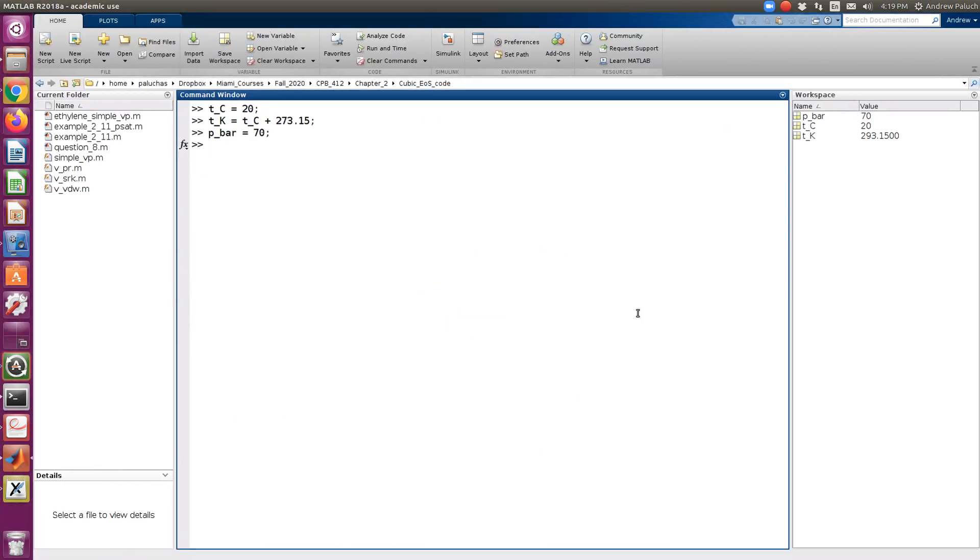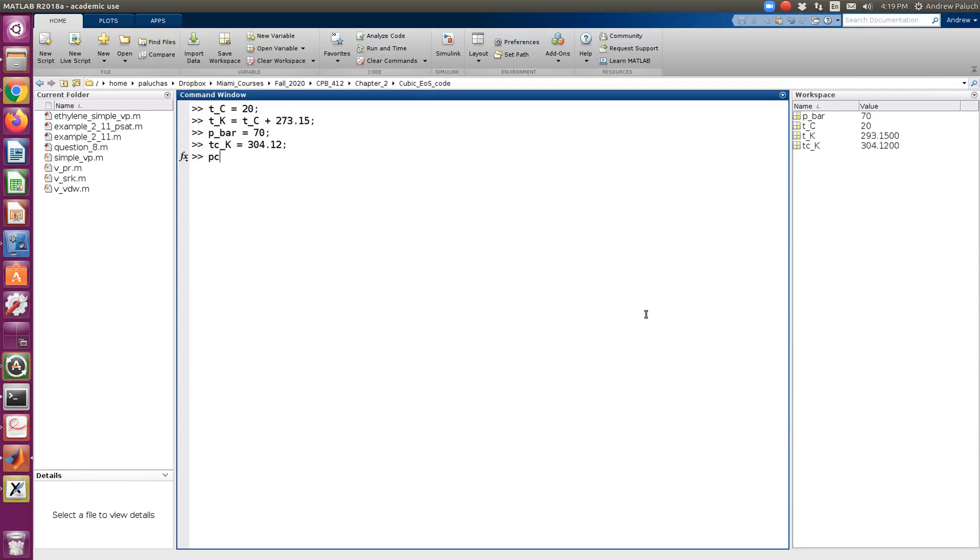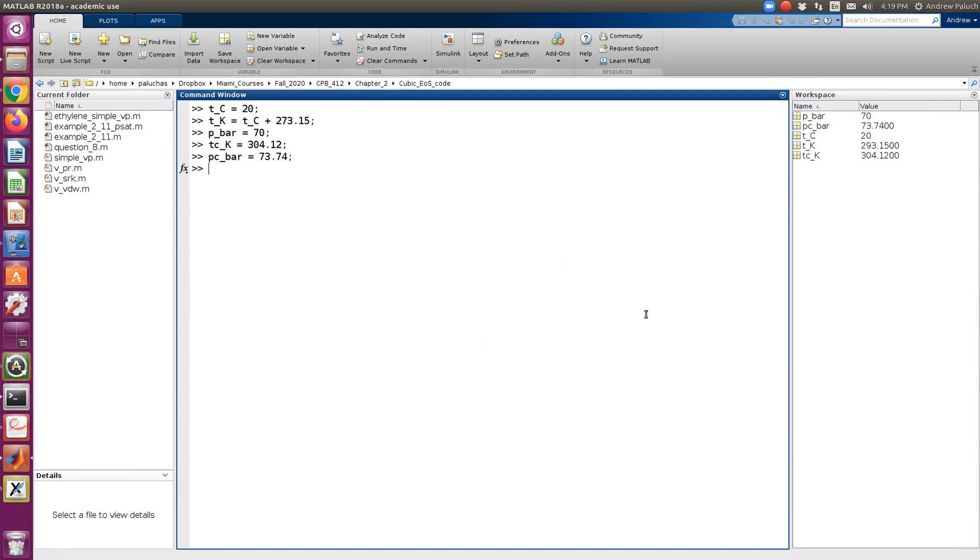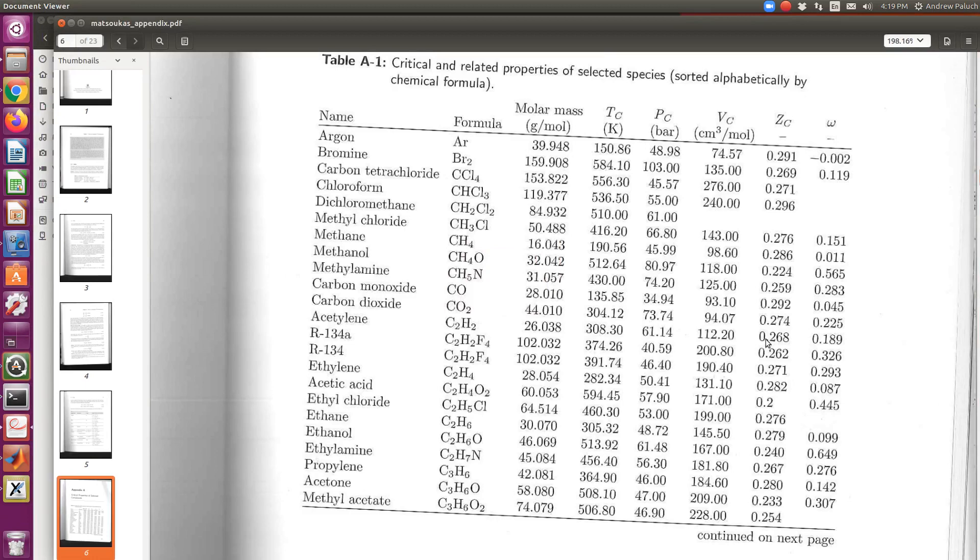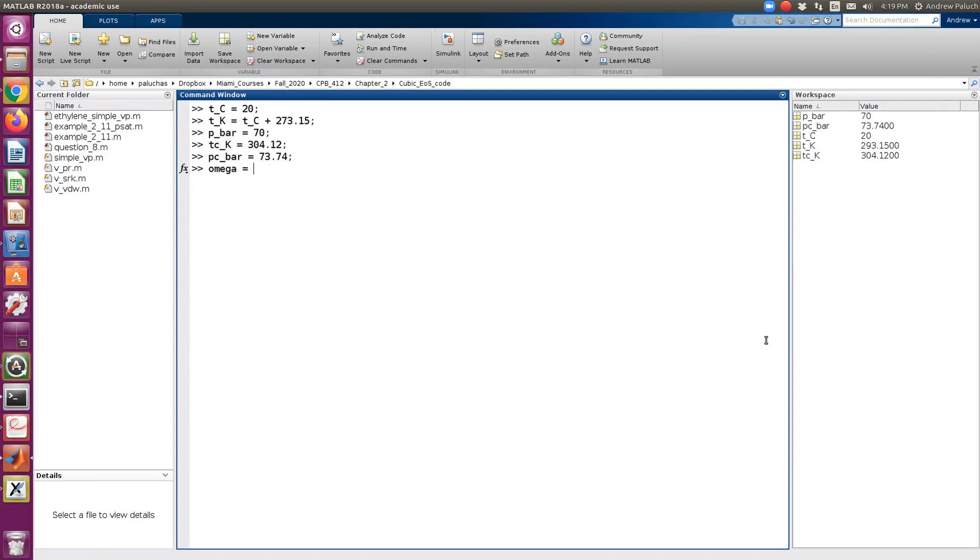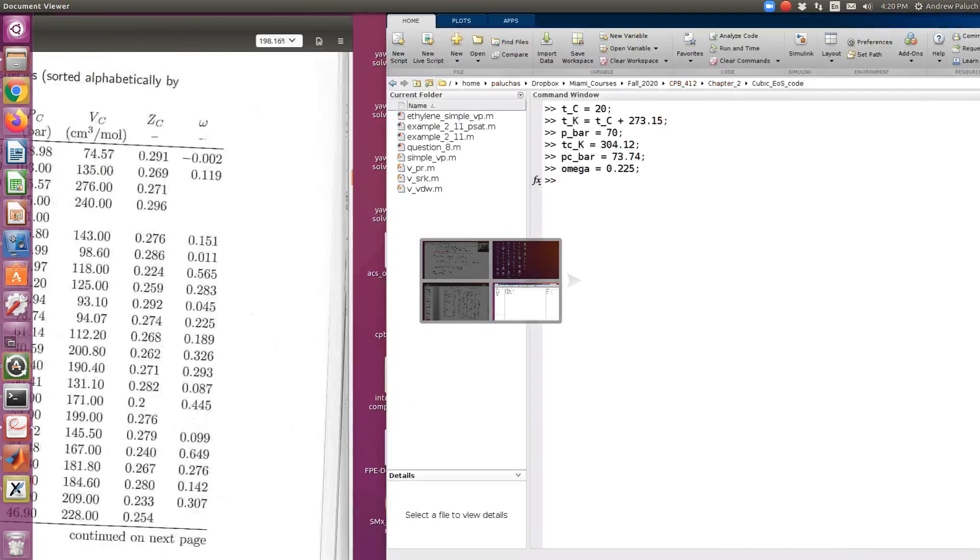But TC is 304.12. Critical pressure is 73.74. Omega is 0.225. Actually, so if you were doing this for homework, maybe put this in a script, that way you can submit your script with your homework problems. That could be very useful. And then the last thing I'll put the molecular weight in there, 44.01.